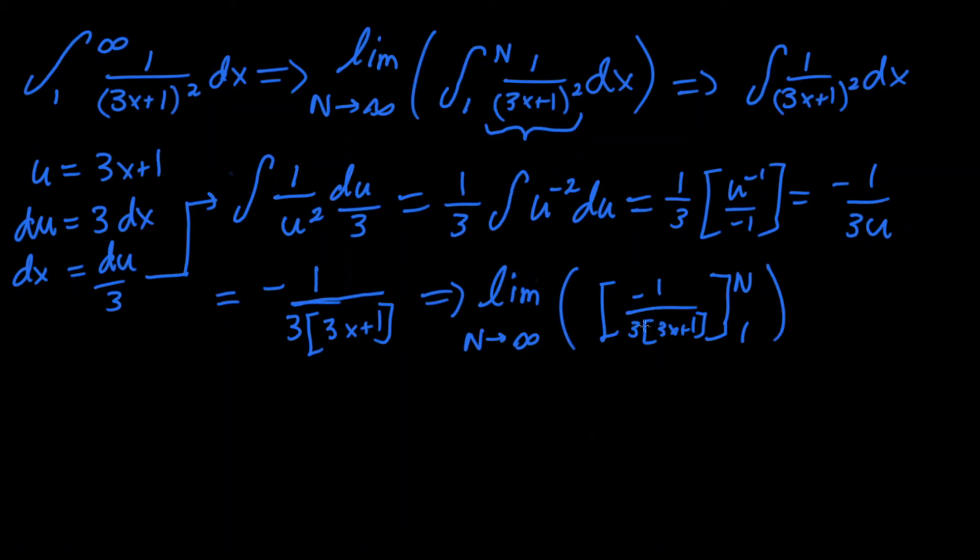So you could do it two ways, you could do it with the negative 1 third and you can do it out, or you could treat that as a constant actually, and that will save you a little bit of time. So we can bring that out, negative 1 third, since it's a constant, you can see that right over here, times the limit, as n approaches infinity.